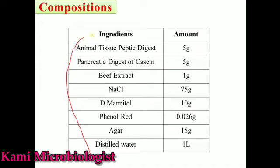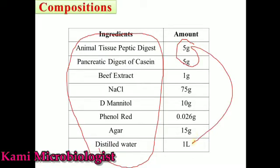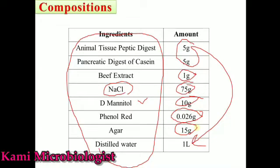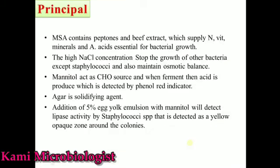Now let's talk about the composition of this media. The most important ingredients are: animal tissue peptide digest and pancreatic digest of casein — 5 grams per liter; beef extract — 1 gram per liter; NaCl — 75 grams per liter; D-Mannitol — 10 grams per liter; phenol red — 0.026 grams per liter; agar — 15 grams per liter; and distilled water to make up 1 liter.